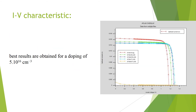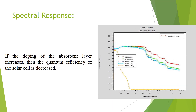From the IV characteristic, we notice that when we increase the doping of the absorber layer, the open circuit voltage increases and the short circuit current decreases. From this graph, we also notice that the external quantum efficiency takes its maximum value for low doping of the absorber layer.